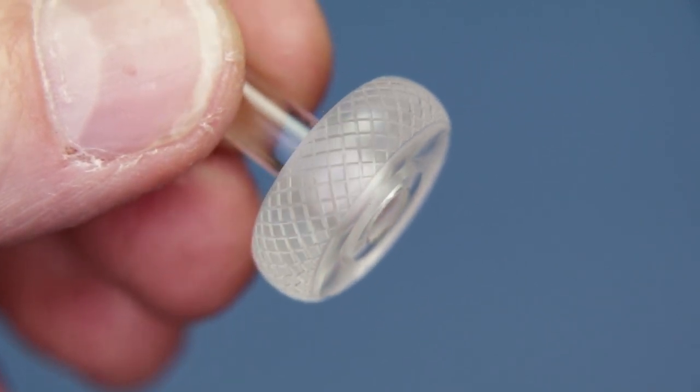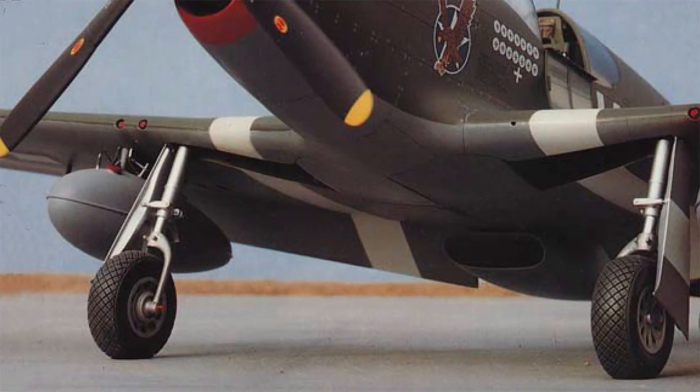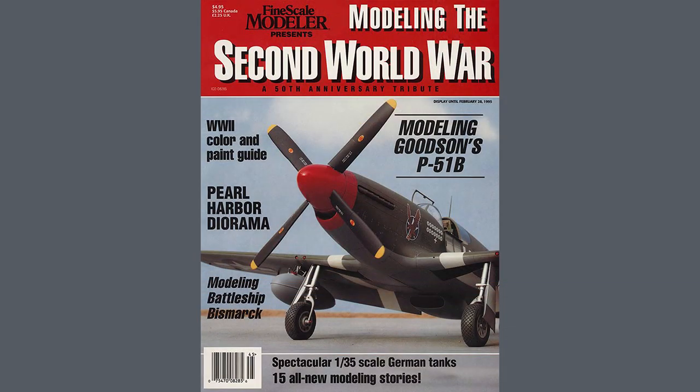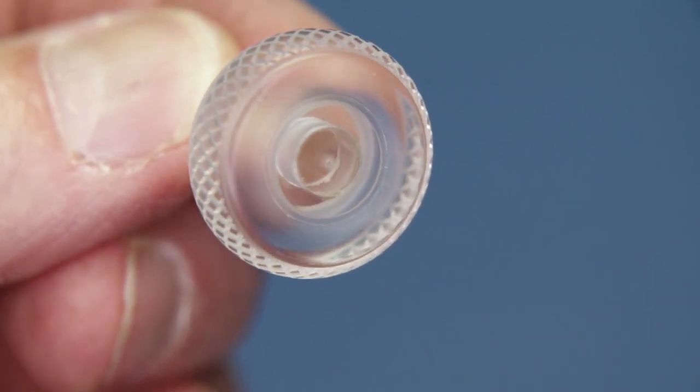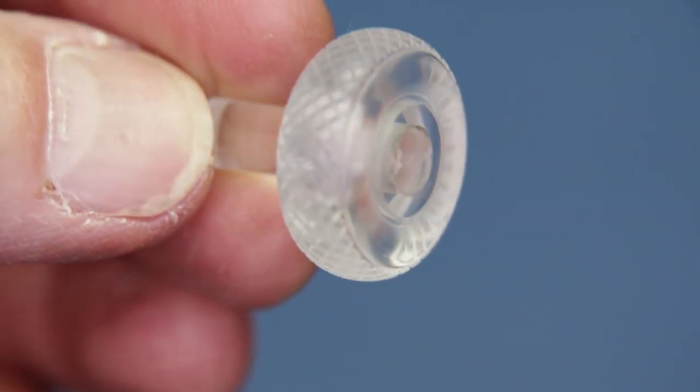So here's the tire pattern that I created for the 32nd P-51 that appeared on the cover of the fine-scale Special WWII Tribute Edition. Keep in mind, when I created the pattern, the center was open and the pattern was press-fit on the mandrel.